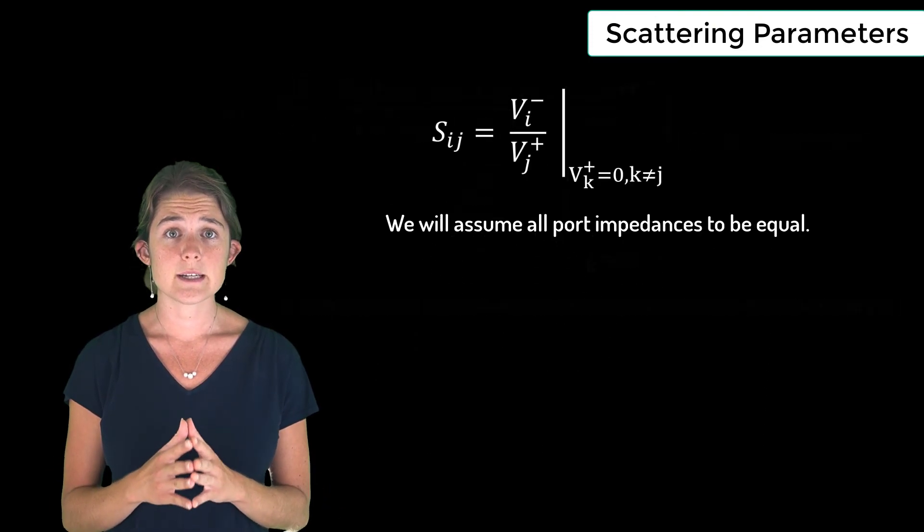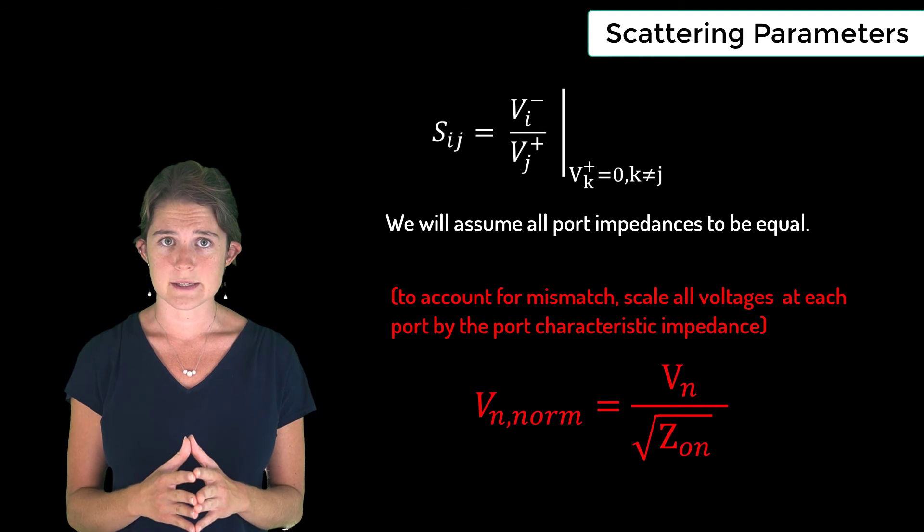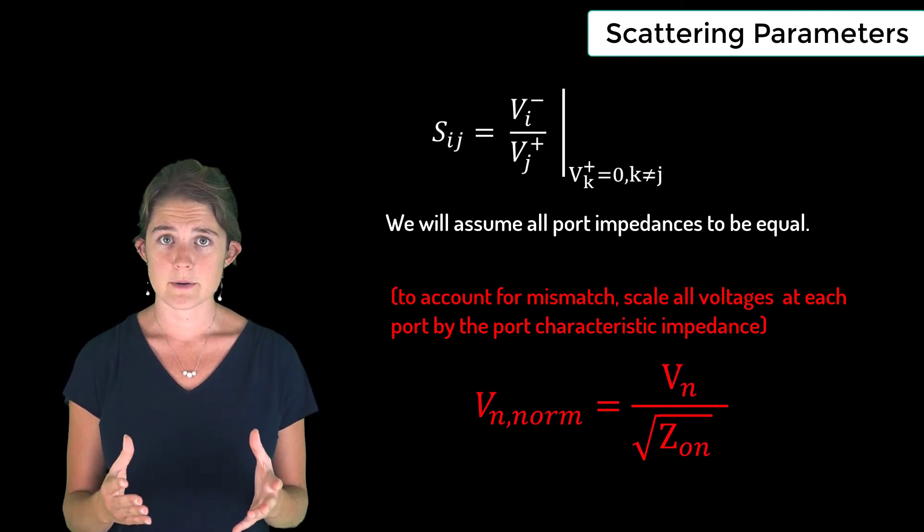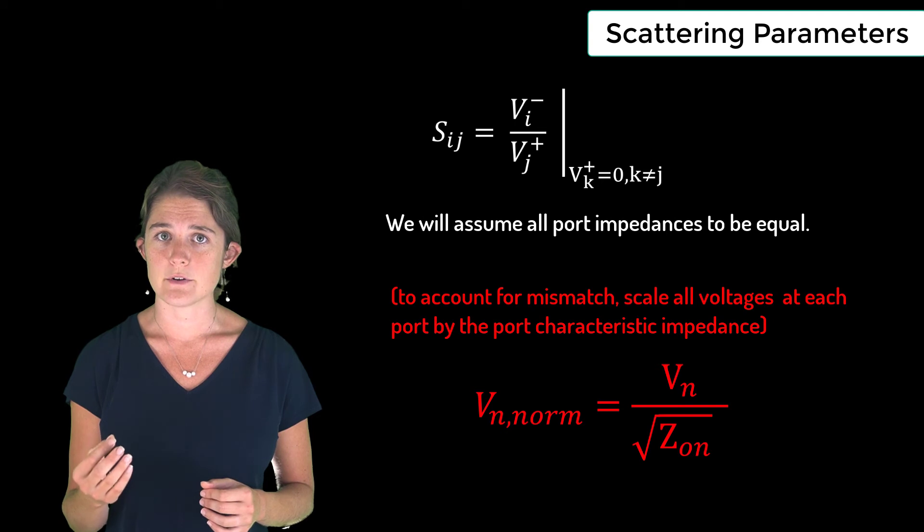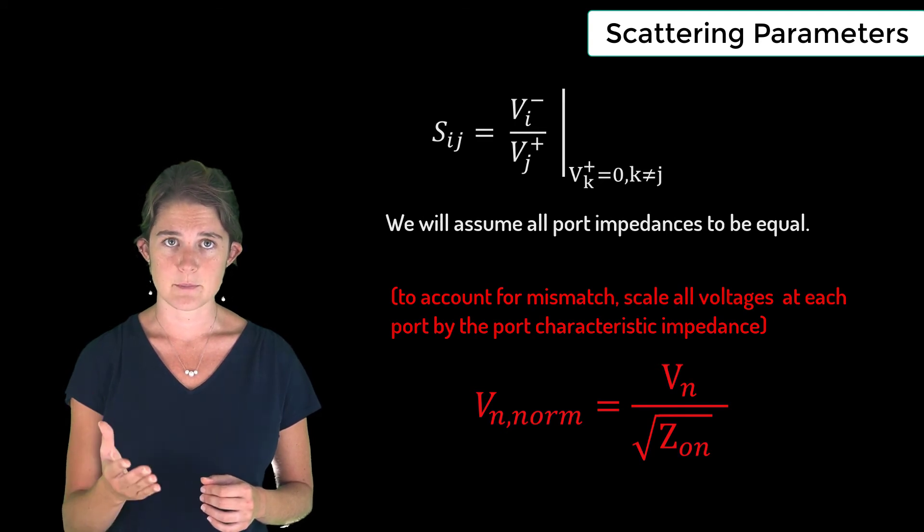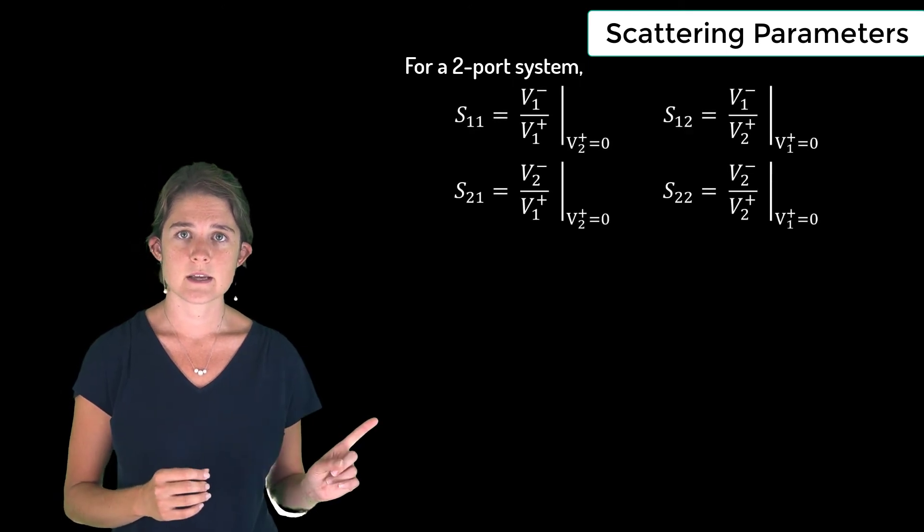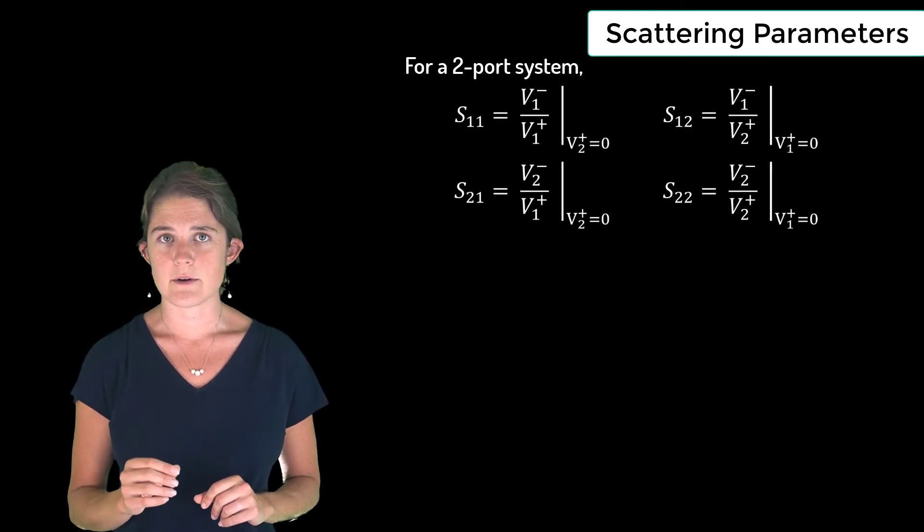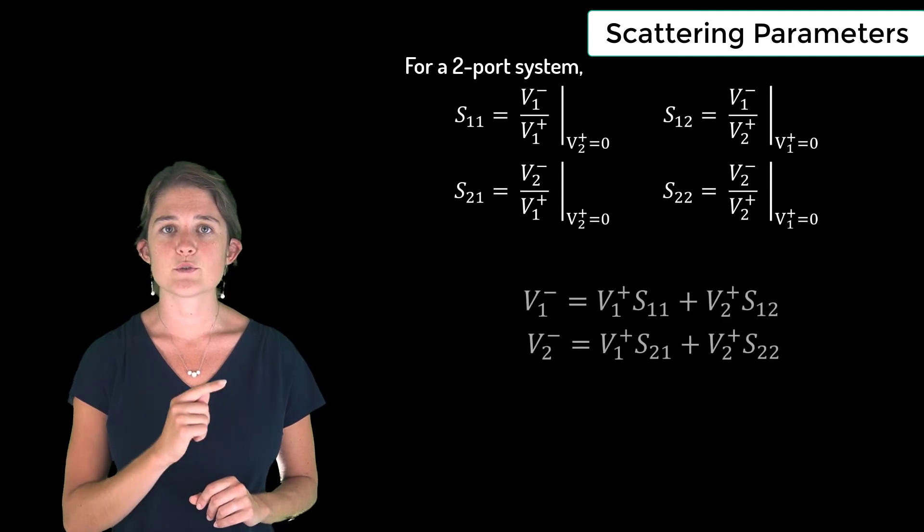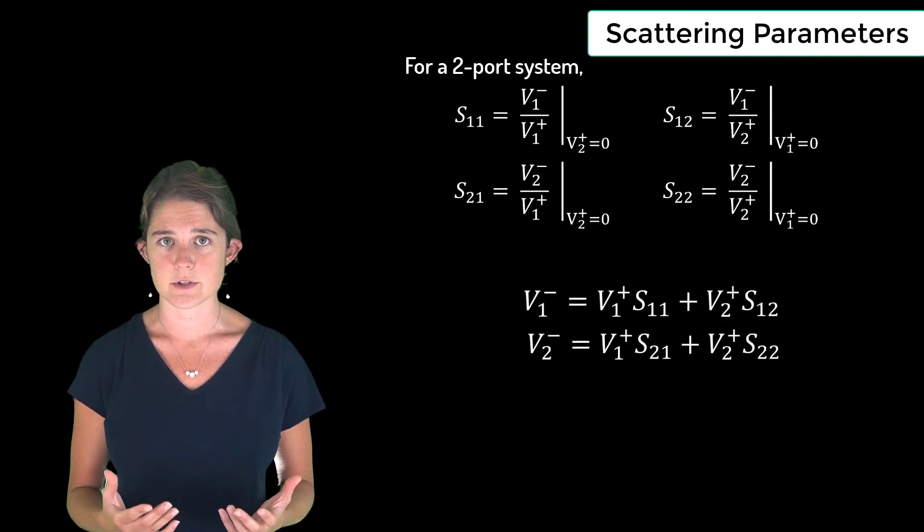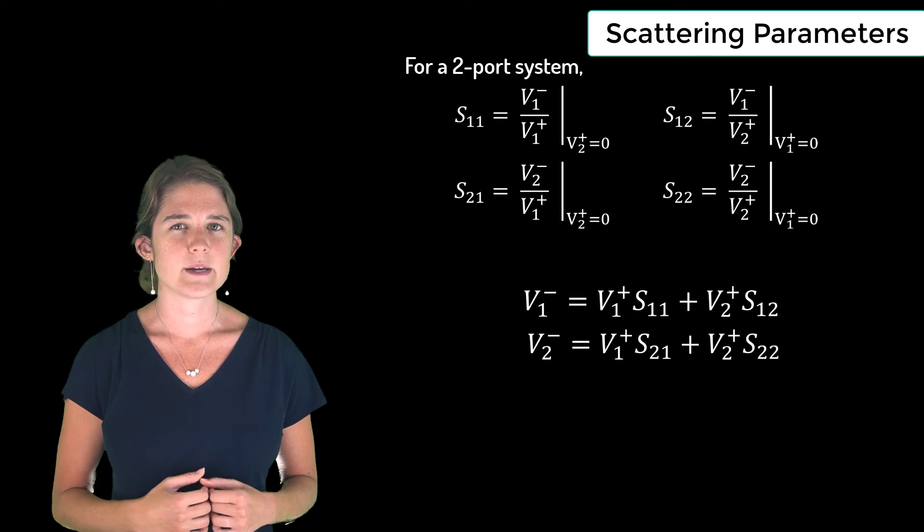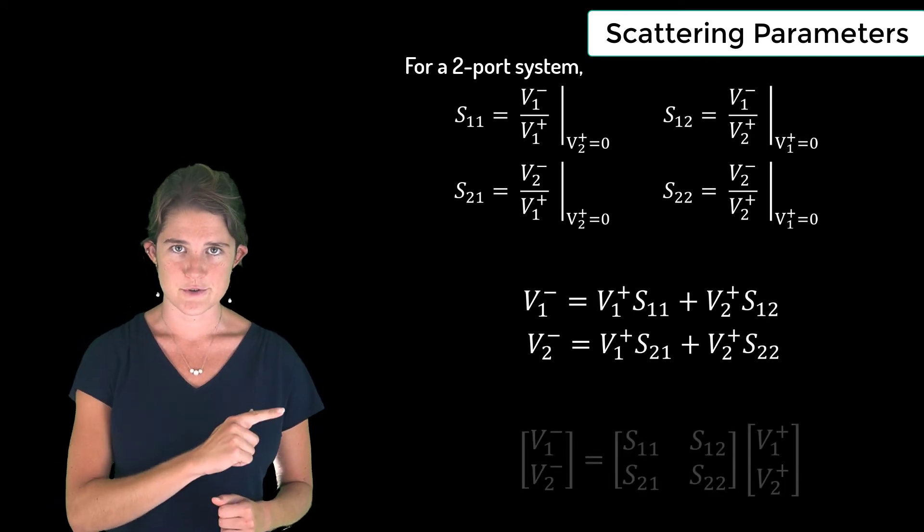If you ever need to deal with mismatched port impedances, just remember that all voltages at a port must be scaled by the square root of the characteristic impedance at that port. For the case of a two-port system, the elements are defined according to these equations, and the total voltage coming out each port may be written as this weighted combination of the input voltages. This may also be expressed in matrix form as shown here.